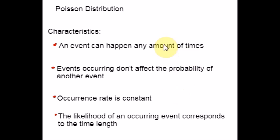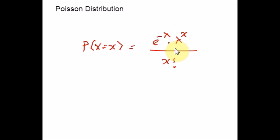So if you get a problem and you understand that if these characteristics are there in the question, then you can identify that the question is from the Poisson Distribution topic. X here is the actual number of occurring successes and lambda is the average number of successes within the specified region.